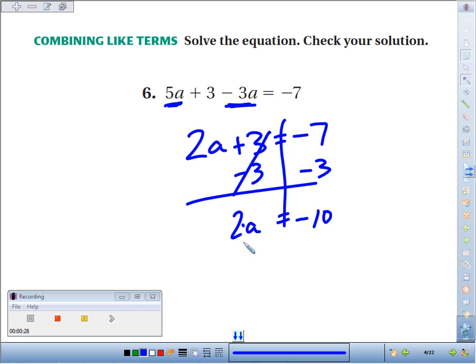And our last step, the inverse of times 2, is to divide by 2 on both sides. And we'll get a equals negative 10 divided by 2 is negative 5.